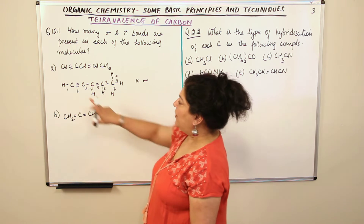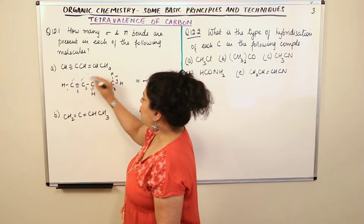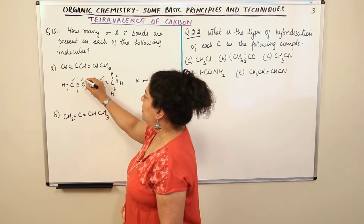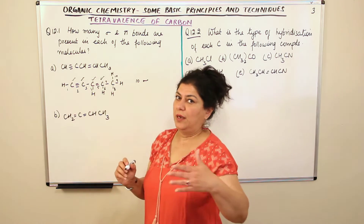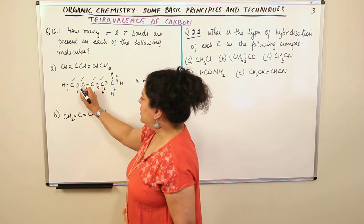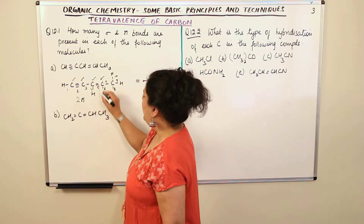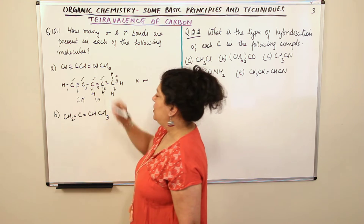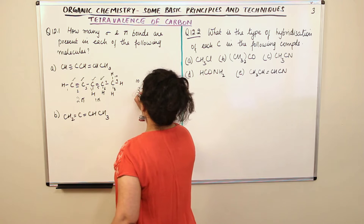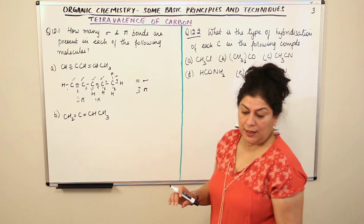And how about the pi bonds? After the first bond, where are the multiple bonds? The multiple bonds are present between the two carbons in the triple bond and the two carbons in the double bond. The first bond is always a sigma bond; the additional bonds are pi bonds. So in the triple bond you have two pi bonds, and in the double bond you have one pi bond — a total of three pi bonds. So this molecule has ten sigma bonds and three pi bonds.